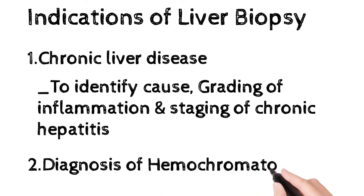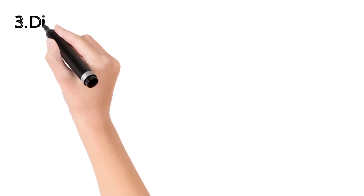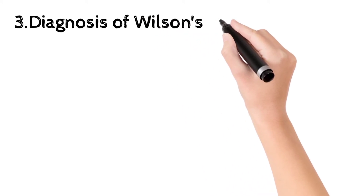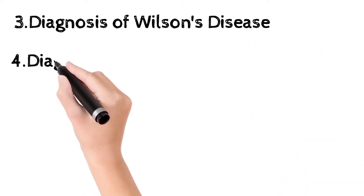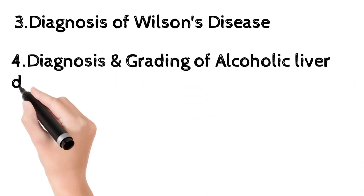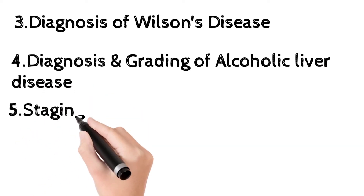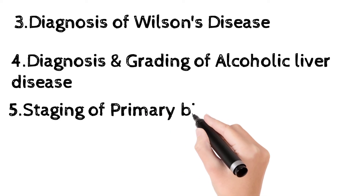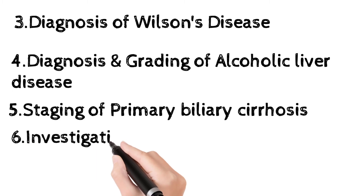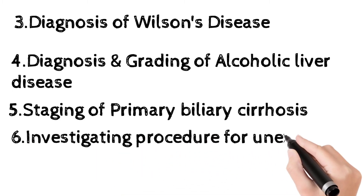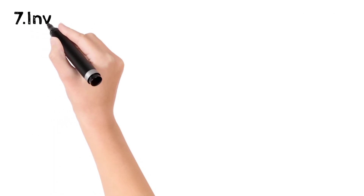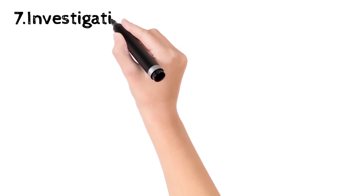The second indication is diagnosis of hemochromatosis, where iron accumulates in the liver. The third is diagnosis of Wilson's disease, where copper accumulates in the liver. The fourth is diagnosis and grading of alcoholic liver disease. The fifth is staging of primary biliary cirrhosis or primary sclerosing cholangitis. The sixth is investigating unexplained abnormal liver function tests.